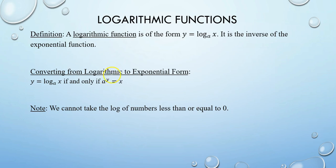There's an easy way to convert from log to exponential form. If you have y equals log base a of x, a is called the base. Think about it this way — it's all about the base. A is your base, and in exponential form, a will need an exponent. So if a is hanging out with x in log form, that means a will be hanging out with the other component, y, in exponential form. At the end of the day, you get a to the y equals x. That's how you convert from log to exponential form. Remember, it's all about the base.